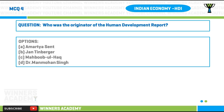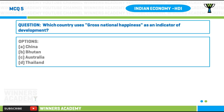Question number four: who was the originator of the Human Development Report? Question number five: which country uses Gross National Happiness as an indicator of development? A) China, B) Bhutan, C) Australia, D) Thailand.